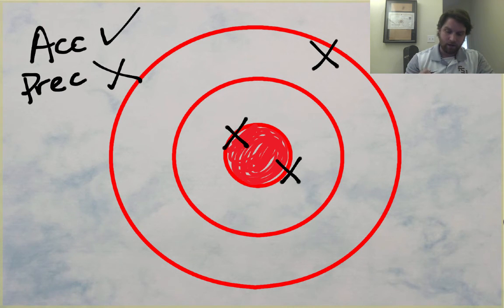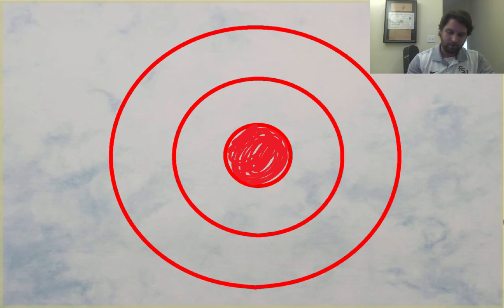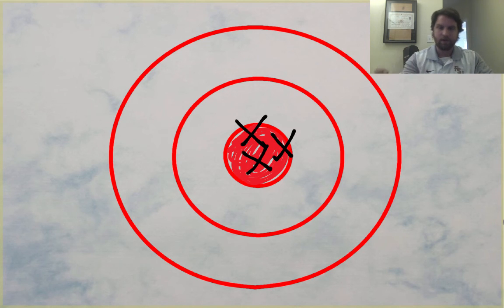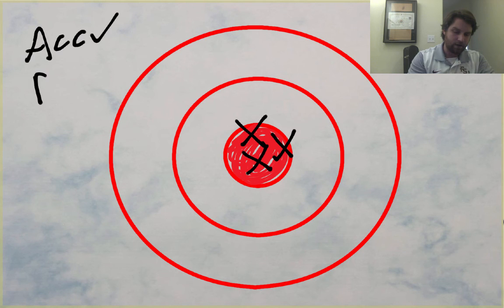All right. So, now, can you guys guess what would be accurate and precise? Well, yeah, I mean, you throw three darts and they all hit your mark exactly where you're aimed and they're a tight group. So that is accurate, yes, precise, yes.